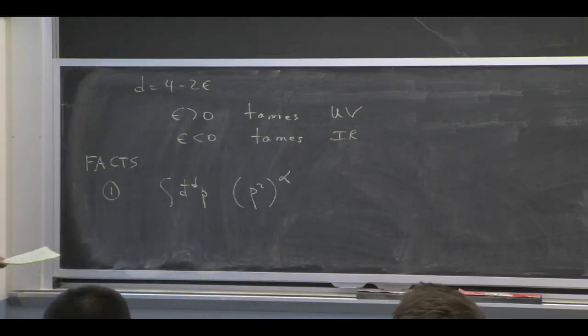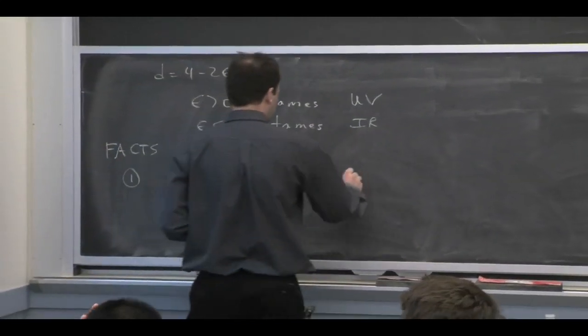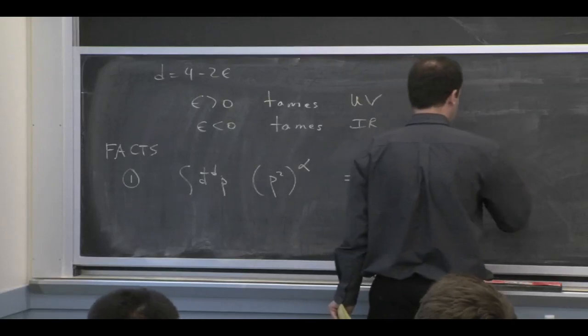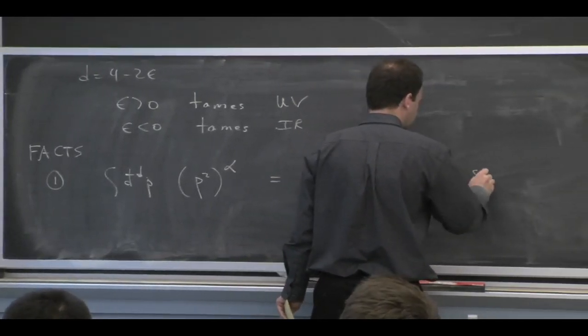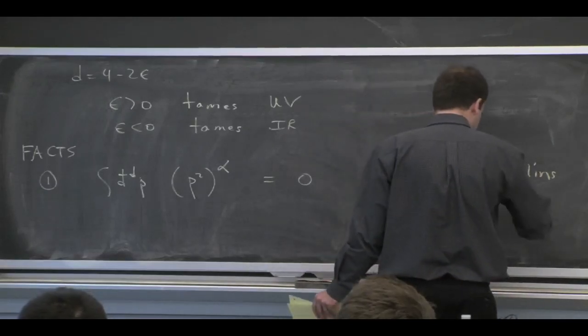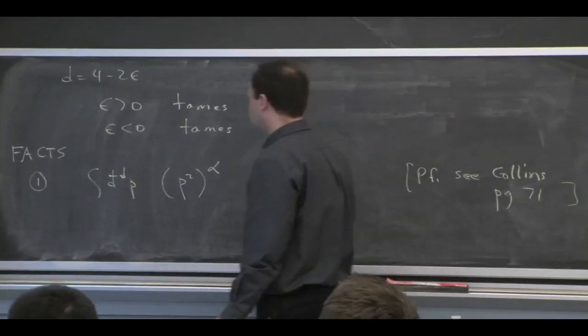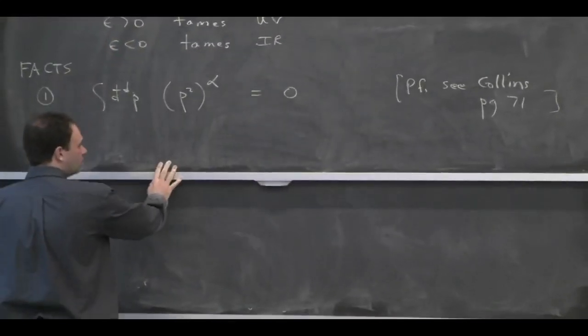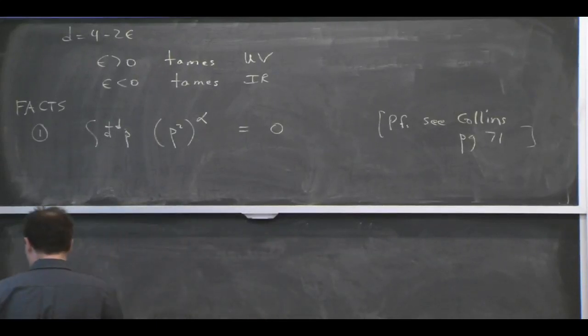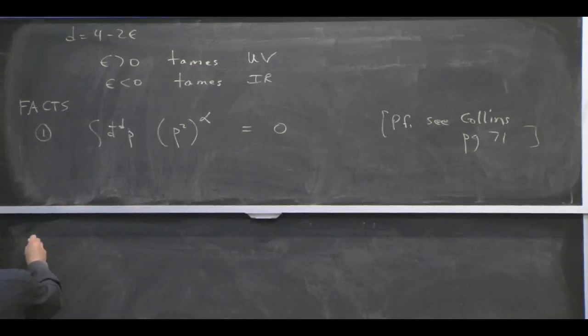So one of them is that if I have P to an arbitrary power, think of it as Euclidean, that's 0. So Collins constructs a proof of this on page 71, which is actually a little more involved in general. I'll just give you kind of an idea of how you can see that from using our axioms that something like this better be true.